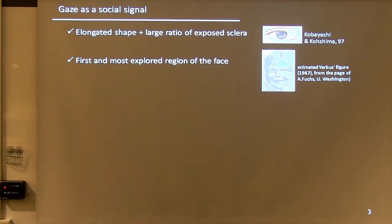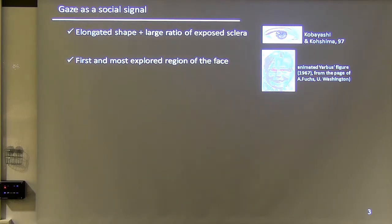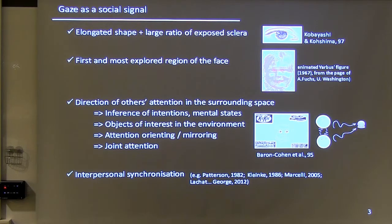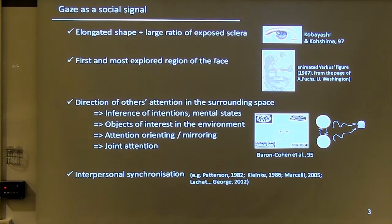Why are we interested in gaze? It seems that in humans, the eyes have evolved to become a signal to others — not only channels through which you gather information on the environment, but with the large exposed white sclera, our eyes are signals to others. The eyes are the first and most explored region of the face, and they have become a crucial cue to the direction of others' attention, allowing inference of intention, mental states, and giving rise to attentional cueing — an elementary component of joint attention and a building block of mentalizing ability. Gaze is also crucial in interpersonal synchronization.